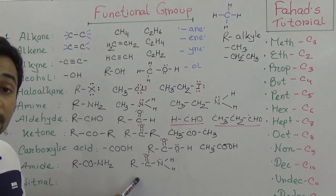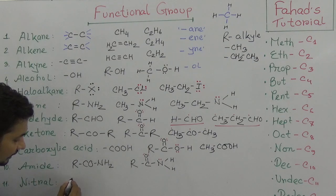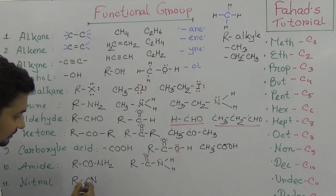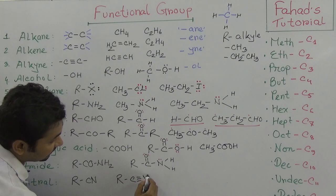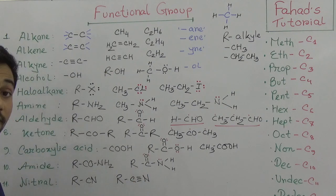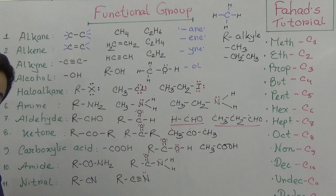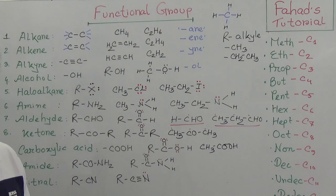Finally, nitrile has the functional group -CN, written as R-C≡N. In the Lewis structure, carbon is triple-bonded to nitrogen.